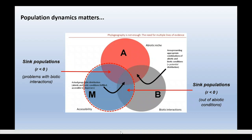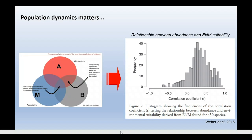So population dynamics matters. Under this reasoning, we expected a positive relationship between environmental suitability as estimated by ENMs and empirical estimates of abundance — places that are more suitable to the species in terms of the environment will have more individuals of that species. There are many difficulties to estimate this relationship because of statistical issues, sampling problems, and lack of data. But in general, you can see that this prediction holds. We have on average about 0.4 in this analysis combining information for hundreds of species — a positive relationship between abundance and environmental suitability.